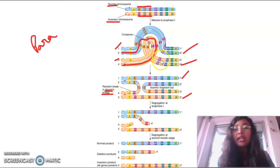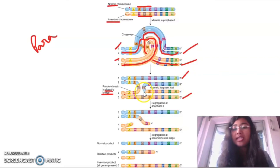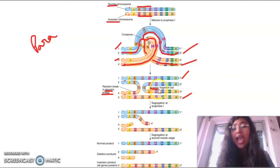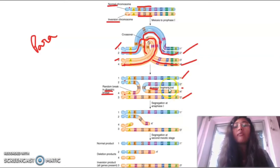The other recombinant strand — running H, G, F, E, D, C, then crossing over, then B, E, F, G, H — does not contain any centromere. This is called an eccentric chromosome (acentric). During anaphase, spindle fibers cannot attach to it, so it will be lost. Thus, in paracentric inversion, crossing over produces a dicentric bridge and an eccentric (acentric) chromosome.